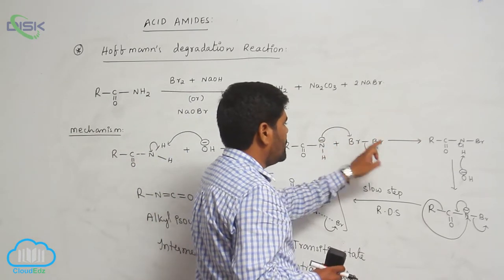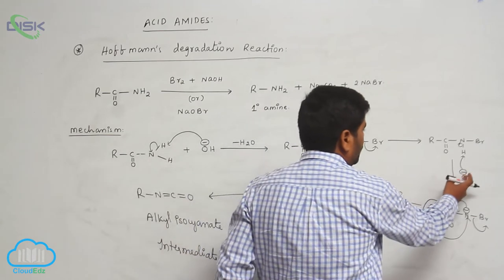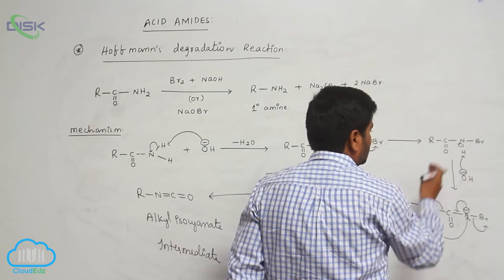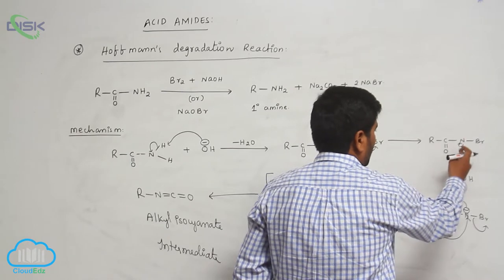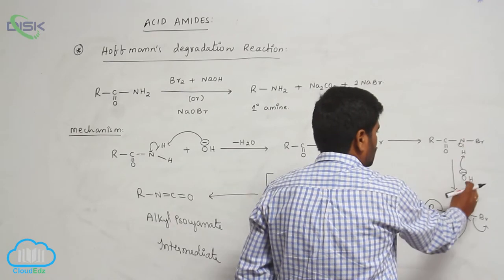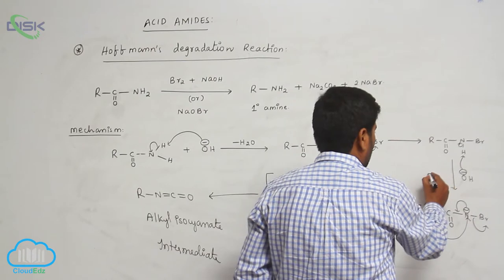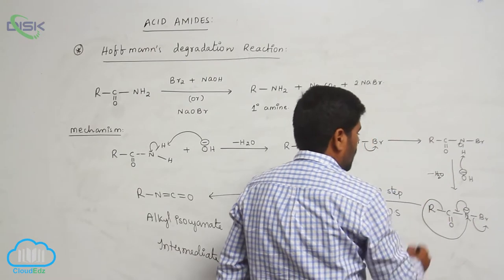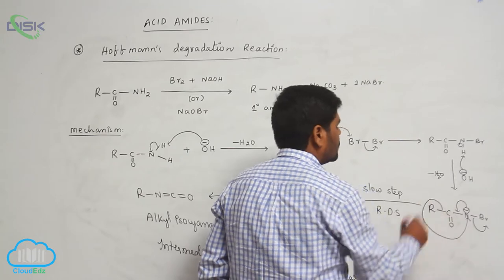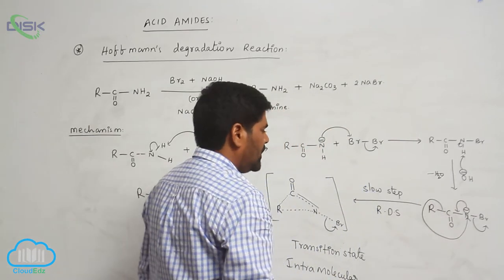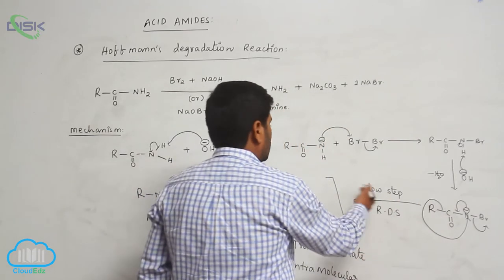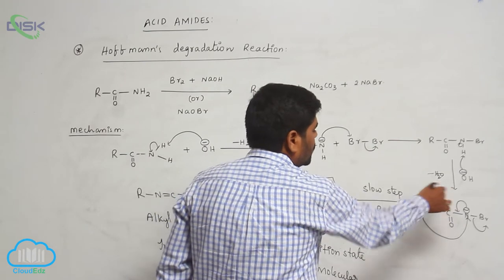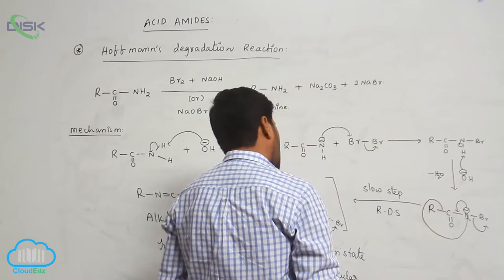Loss of Br⁻ takes place to form an N-bromoamide intermediate. It again reacts with base, and loss of a water molecule takes place, forming a nitrene-type intermediate where the alkyl group migrates towards the electron-deficient nitrogen atom.